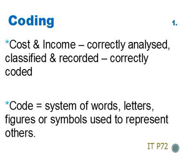In order for cost and income to be correctly analyzed, classified, and recorded, they need to be first correctly coded to the accounting system. A code is a system of words, letters, figures, or symbols used to represent others.